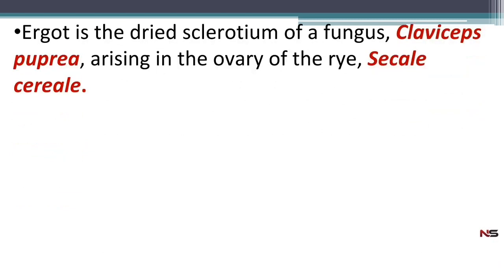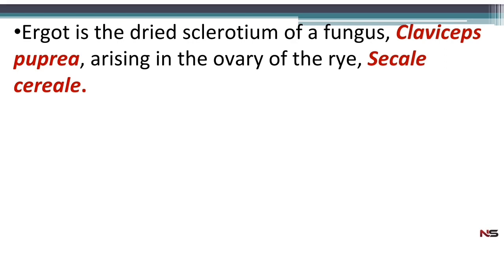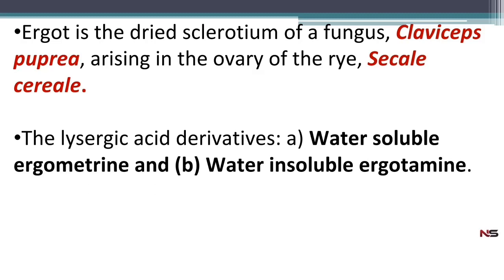Ergot is the dried sclerotium of the fungus Claviceps purpurea arising in the ovary of rye, Secale cereale. It's actually a fungus growing on cereal ovary. The lysergic acid derivatives present in ergot are ergometrine and ergotamine. Ergometrine is water-soluble and used as an oxytocic for uterine contraction, while ergotamine is water-insoluble and used for the treatment of migraine.